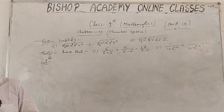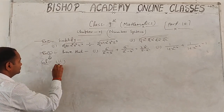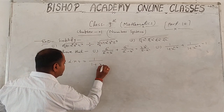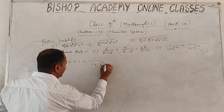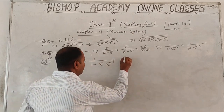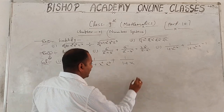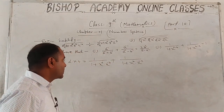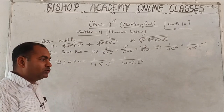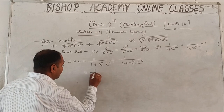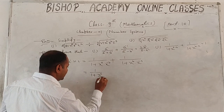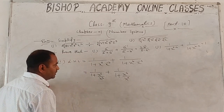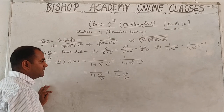Second part of Example 2: prove that 1/(1 + x^(a−b)) + 1/(1 + x^(b−a)) = 1. We convert negative powers to reciprocals: x^(a−b) = x^a / x^b and x^(b−a) = x^b / x^a. So the expression becomes 1/(1 + x^a/x^b) + 1/(1 + x^b/x^a).